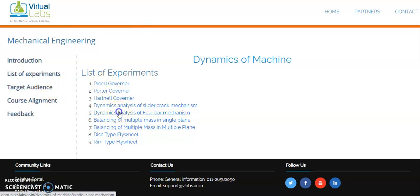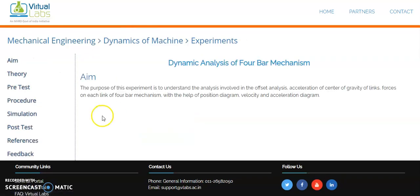Dynamics analysis of four bar mechanism: after getting into that, we have the screen with aim and theory for the particular experiment. We are having a pre-test to attend, the procedure to follow, how the simulation works, and after that we have one post-test for the particular experiment session.